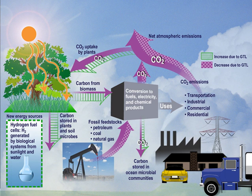Earth system science is the application of system science to the Earth sciences. In particular, it considers interactions between the Earth's spheres—atmosphere, hydrosphere, cryosphere, geosphere, pedosphere, biosphere, and even the magnetosphere—as well as the impact of human societies on these components.